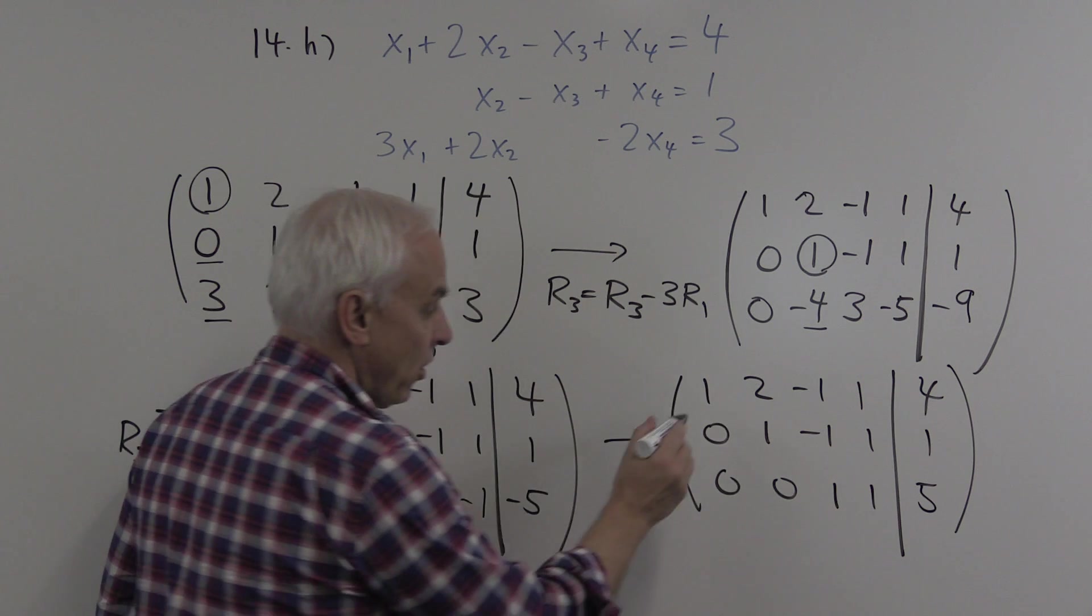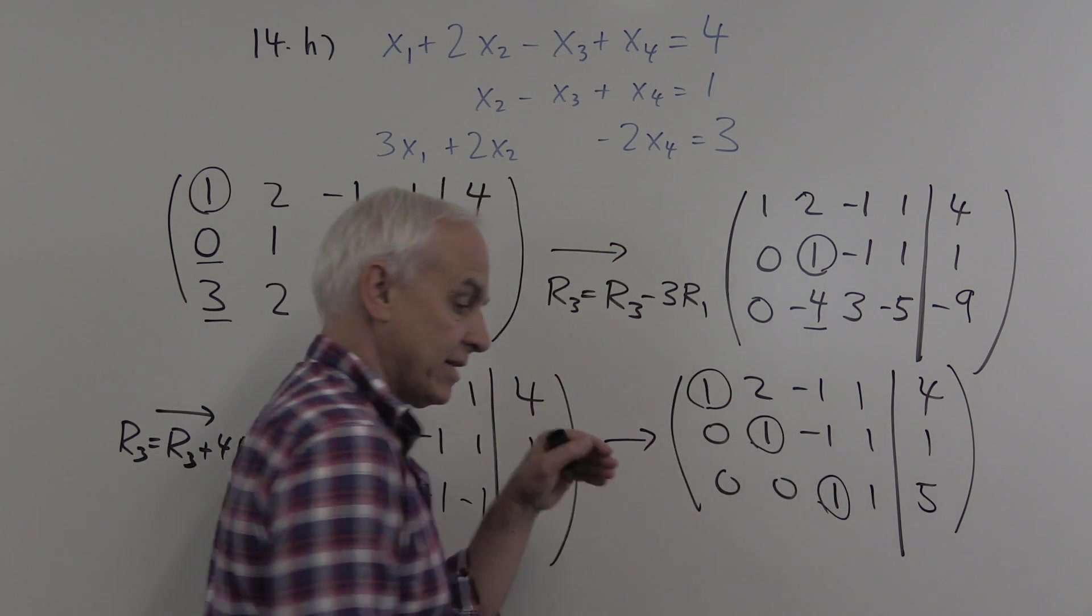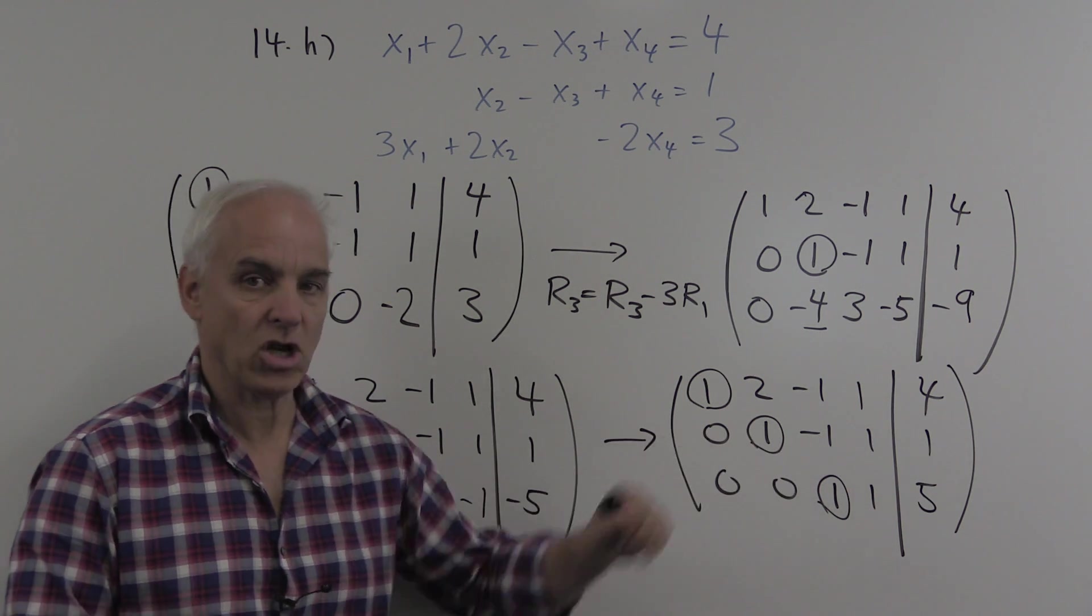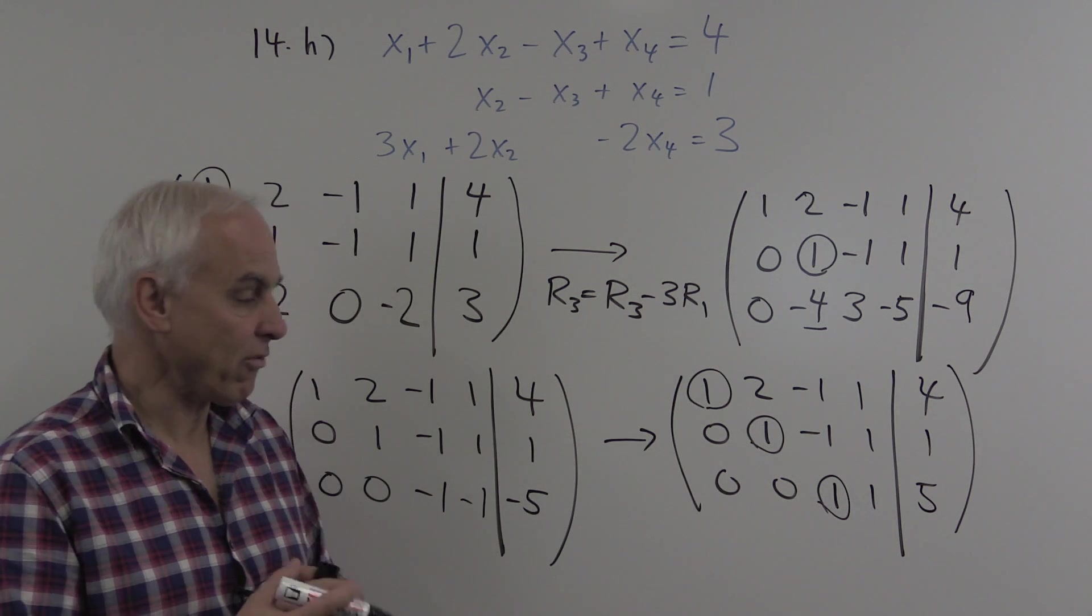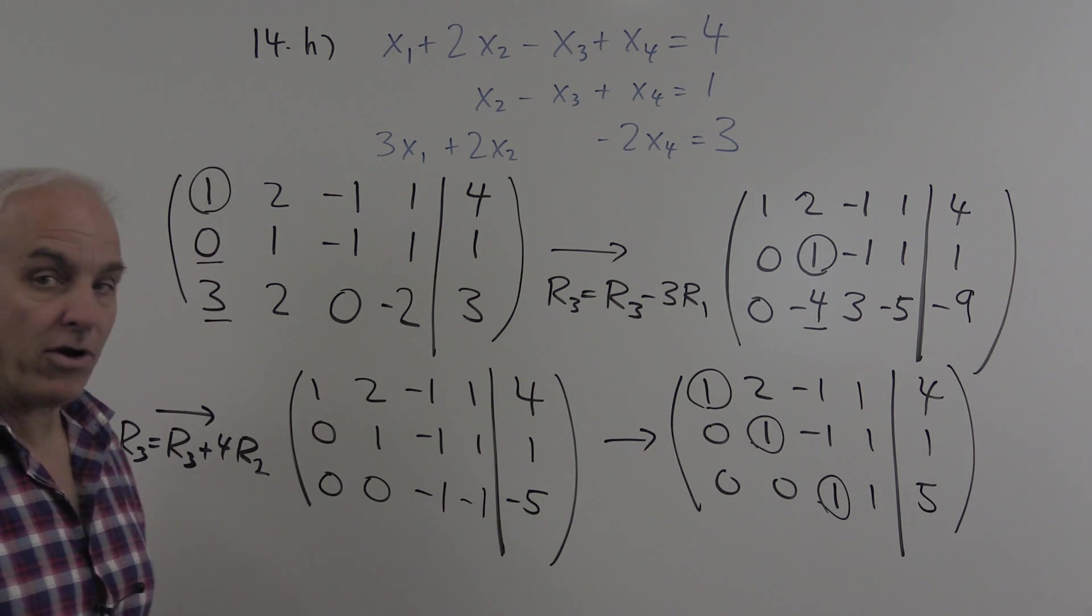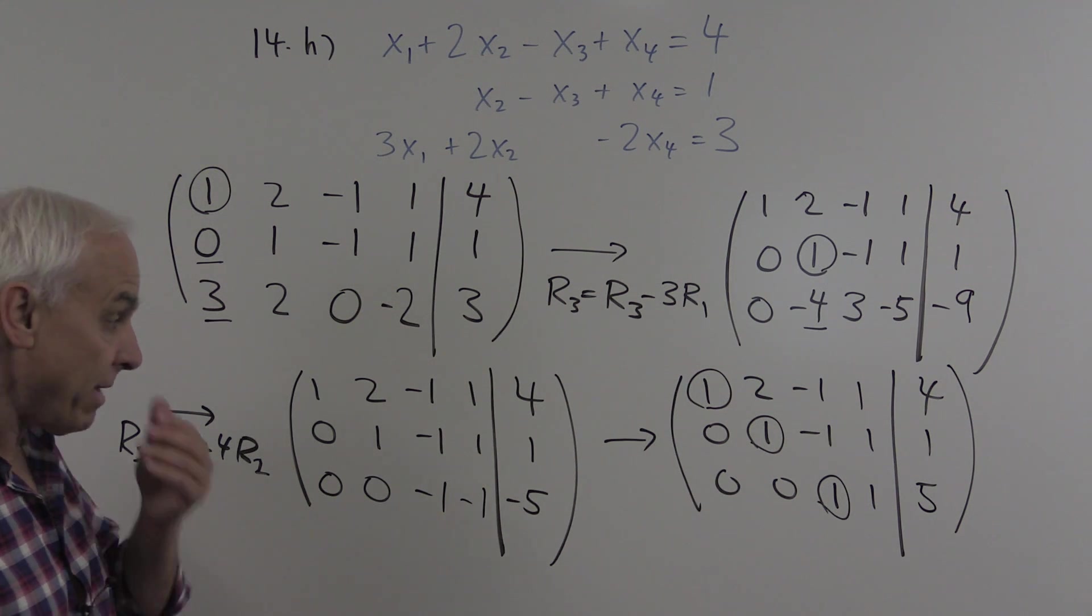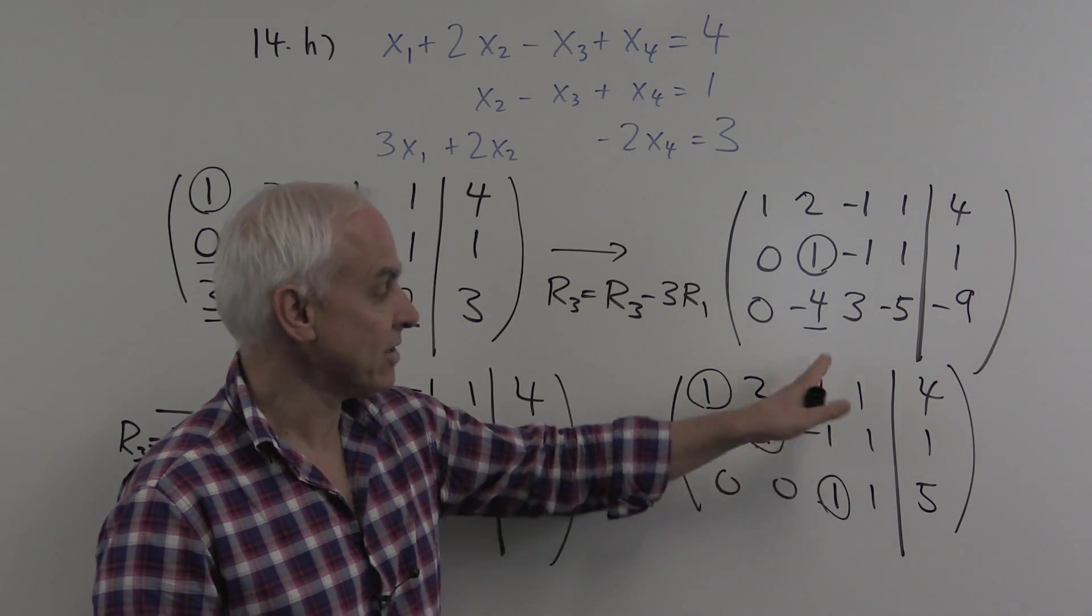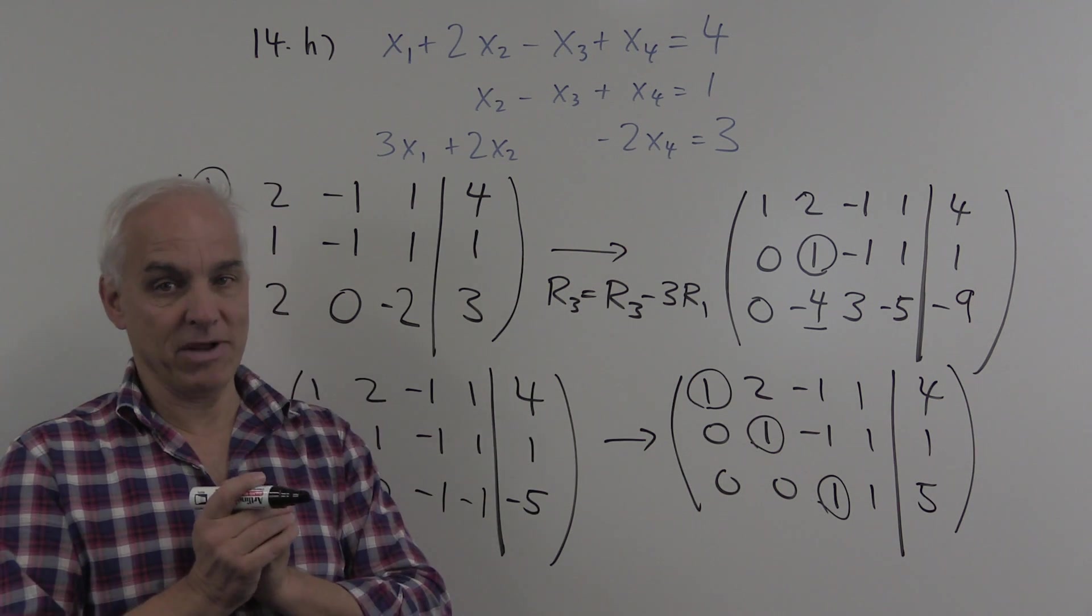At this stage, we have all the leading entries are 1s, and they are spaced successively down and to the right. So this is in row echelon form. That's good. That's sort of the halfway point in our row reduction. Now we're going to carry on and do what's sometimes called back substitution, basically sort of the reverse of what we've been doing, starting with the bottom row to try to eliminate the entries in the columns above our pivot entries.